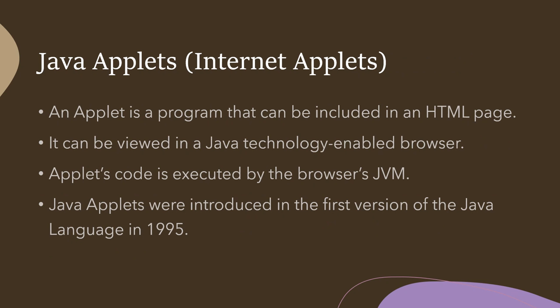Next is Java Applets, also called internet applets. An applet is a program that can be included in an HTML page. When you open a web browser you will see HTML pages with images or animations — that is applets. Applets can be viewed in a Java-technology-enabled browser. If your browser is not Java-enabled you cannot see the applets, and the browser will ask you to download or install Java so they become visible.